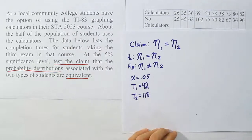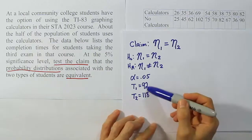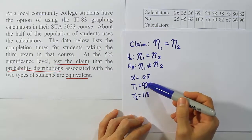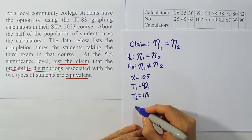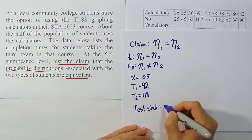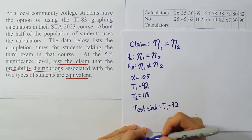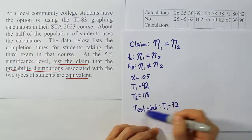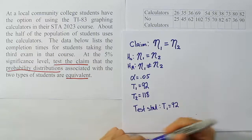So we have the rank totals as they should be. And remember, I said that we were going to use the value here as our test statistic arbitrarily, because we could use either one. So let's let T1 be our test stat. So our test stat here is T1, and that's equal to 92. From here we're going to go compare this against a critical value. In order to do that, we have to have the two sample sizes.